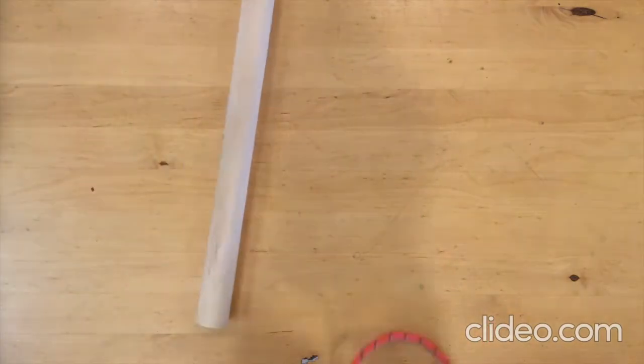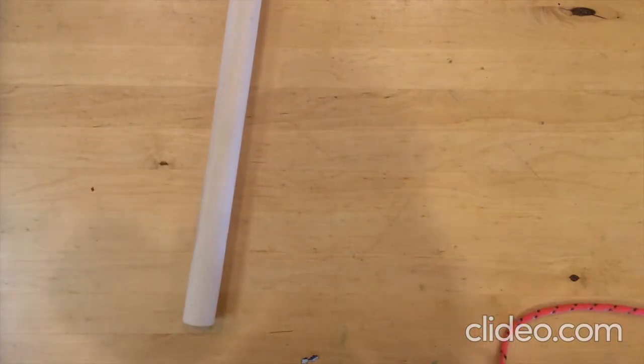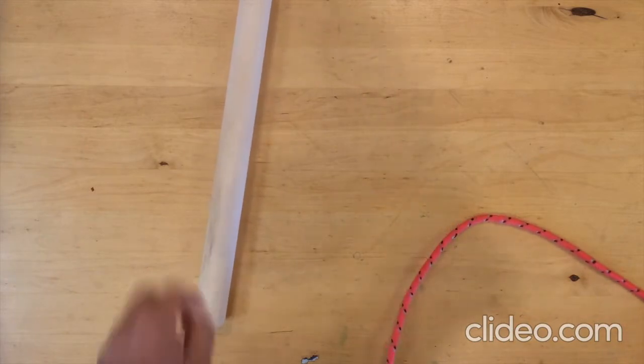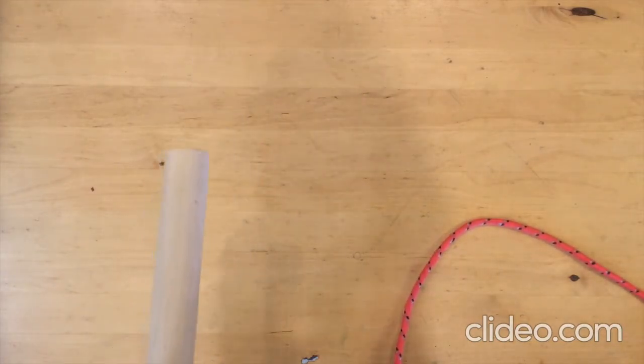Now, there's another way that you can tie the clove hitch. This one is easier if you're trying to slip it over, say, the end of a pole, or a bag, or anything like that.